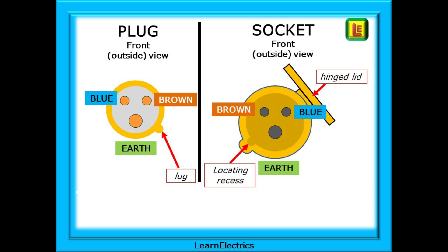What of the socket? The earth is the bigger of the holes and notice that the locating recess for the lug is now on the opposite side, and the blue is still opposite the locating recess but now on the right. The hinged lid will always be opposite the lug or recess and always closest to the blue connection. The brown wire will be on the left with a socket.